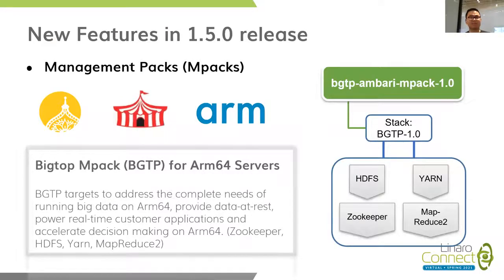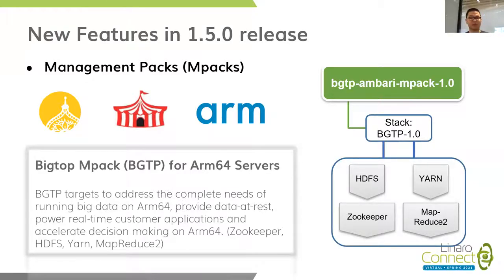Let me give a brief introduction to the new features in the 1.5 release. First is MPKG, which means measurement packages. It defines a set of services and the repos where to obtain software packages for those services. MPKG can be released as separate artifacts for users. It is convenient for users to select different kinds of MPKG in their cluster, which also includes different software services. We defined the BigTop MPKG for ARM64 service, and it includes fundamental elements like HDFS, YARN, ZooKeeper, and MapReduce.